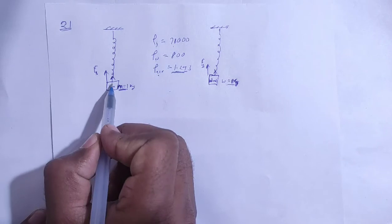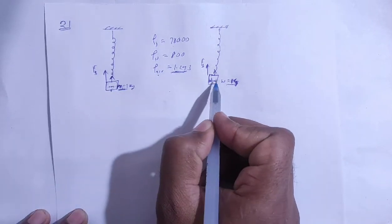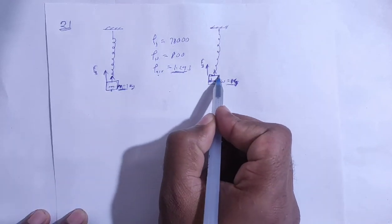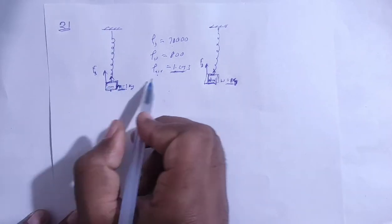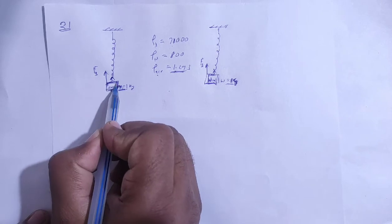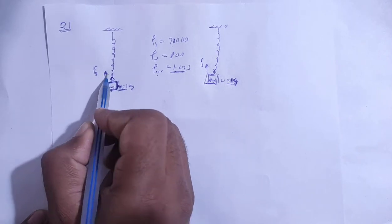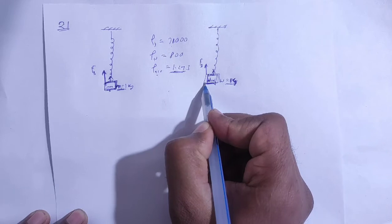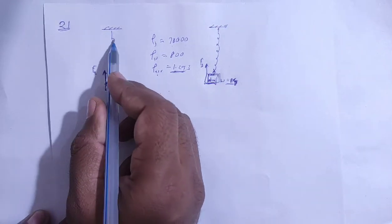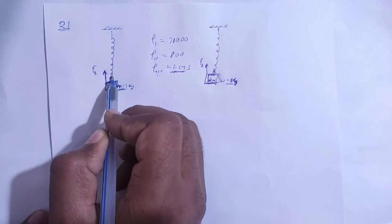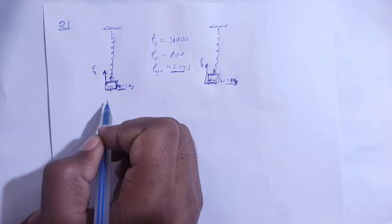Iron density is greater than air and wood density is also greater than air. Since the blocks are denser than air, the buoyant force acts upward. The buoyant force will affect how much weight is measured — it reduces the apparent weight shown by the spring balance.